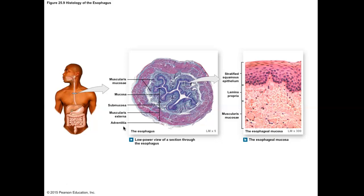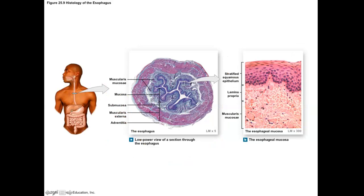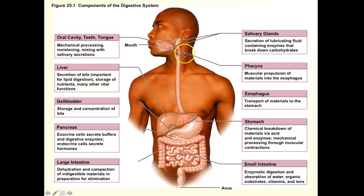The fourth layer of the esophagus is unique: because the esophagus is within the thoracic cavity and not inside the abdominopelvic cavity, it's not covered with serosa. Instead it's covered with adventitia, which is a tougher kind of connective tissue. That's the only trick — the last layer of the esophagus is adventitia, not serosa.